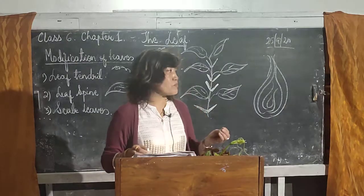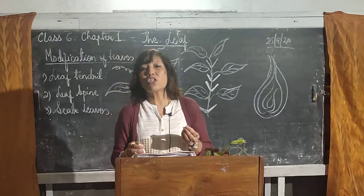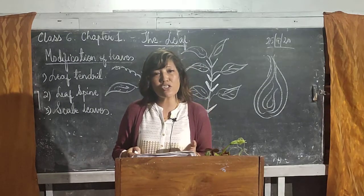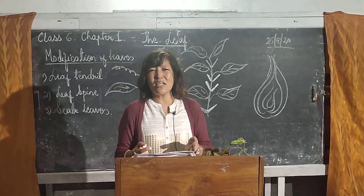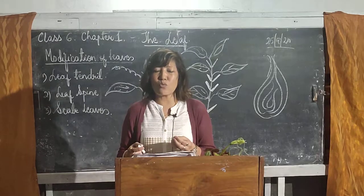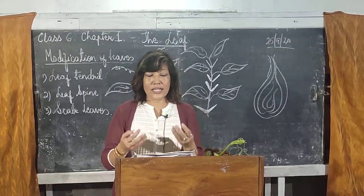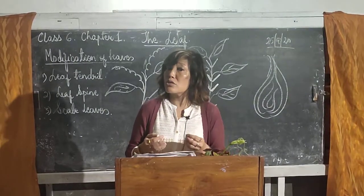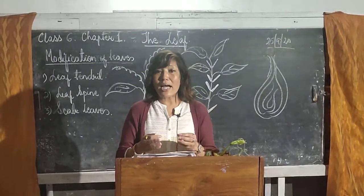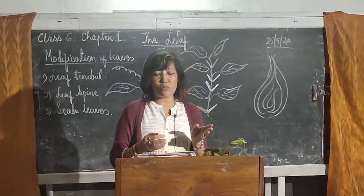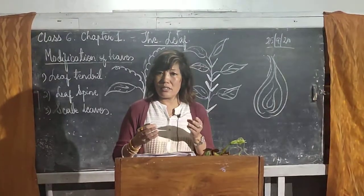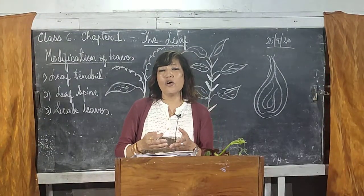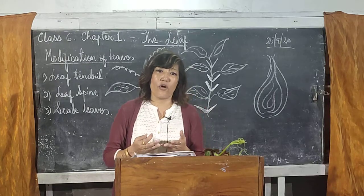The second function of the spine is to reduce the loss of water by the process of transpiration. Transpiration is the process by which excess water is released in the form of water vapor through the stomata present on leaves. So water loss will be reduced by the spine, especially in plants which do not get enough water.